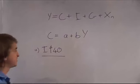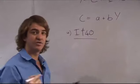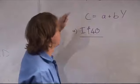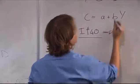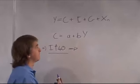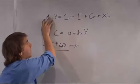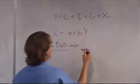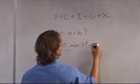If investment increases by 40 units, what is the direct impact? Well, Y is going to increase by 40 units, because investment is part of GDP, part of output. So if that increases by 40 units, output or GDP will immediately increase by 40 units — it implies that Y increases by 40 units.